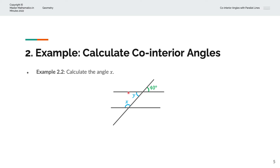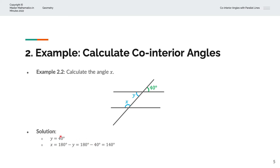We know that this line is a straight line and this line is also a straight line, so vertically opposite angles are identical. We can call Y equal to 40 degrees. And because X and Y are co-interior angles, we can solve for X. The sum of these two must be equal to 180 degrees. So X equals 180 degrees minus Y, which is 180 minus 40 degrees, and that simplifies to X equal to 140 degrees.